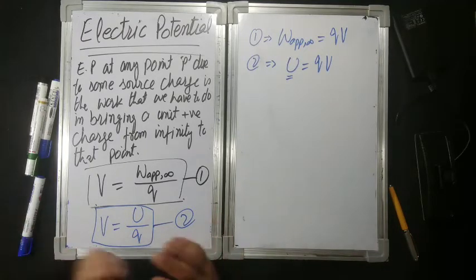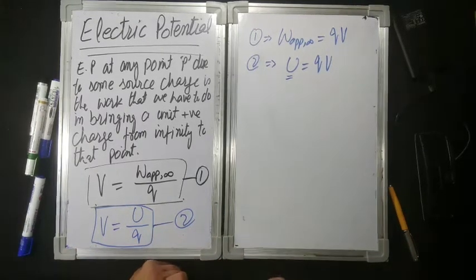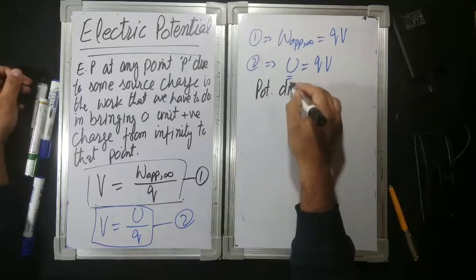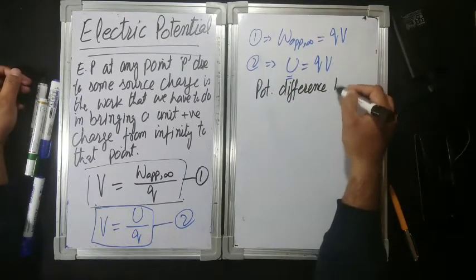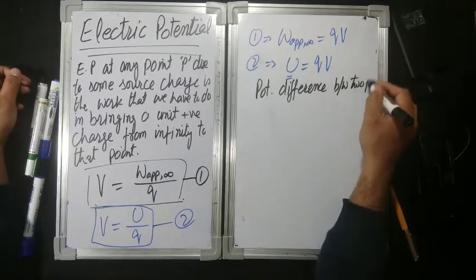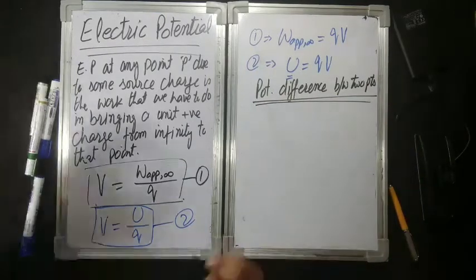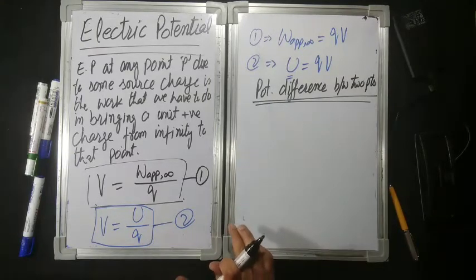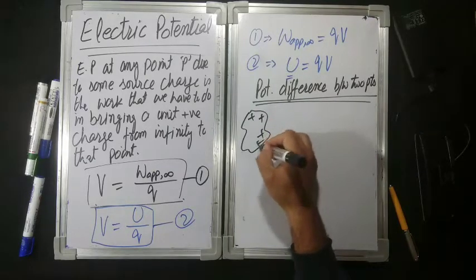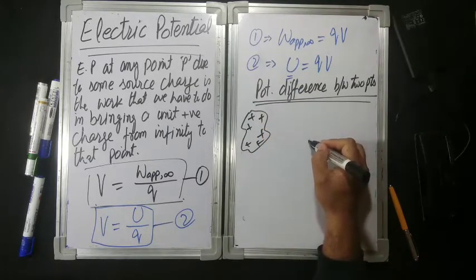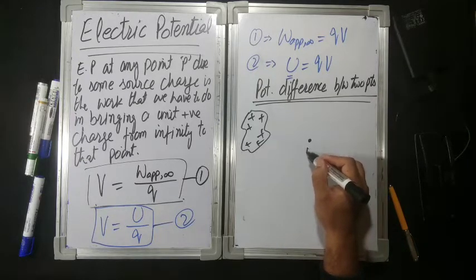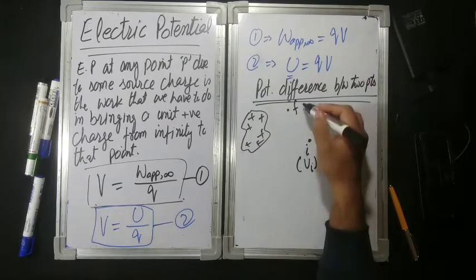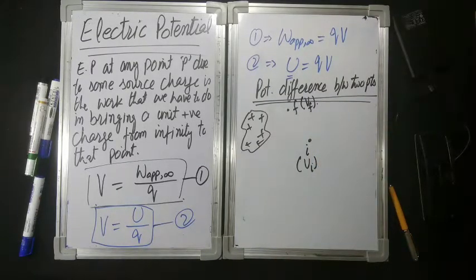Now, two points ke beech mein potential difference jo hai woh kis ke barabar hoga? Two points ke liye potential difference kis ke barabar hoga. If you have a source charge, if you have an initial point, you have a final point with potential VI, and a final point with potential VF.